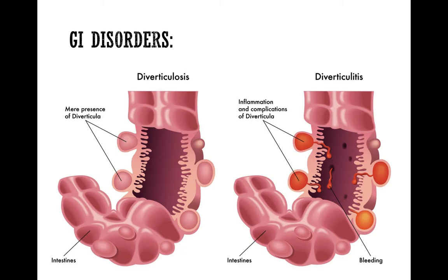Finally, we have two types of irritable bowel conditions: diverticulosis and diverticulitis. These occur when diverticula — little pockets along the GI tract — become present. When those pockets are just sitting there normally, that is called diverticulosis. Someone with diverticulosis should eat a high-fiber diet, which allows food to move smoothly through the GI tract and not get stuck and trapped inside those pockets.